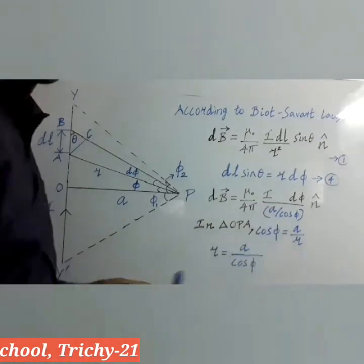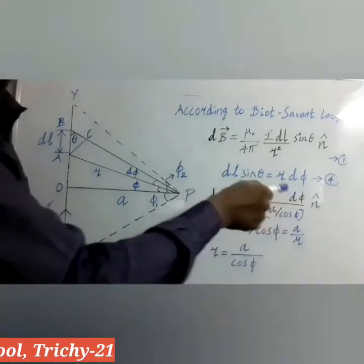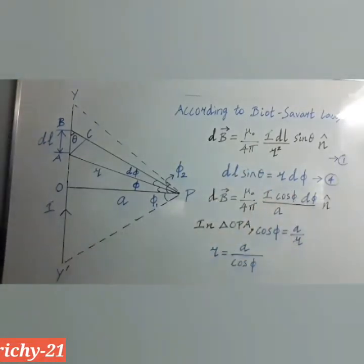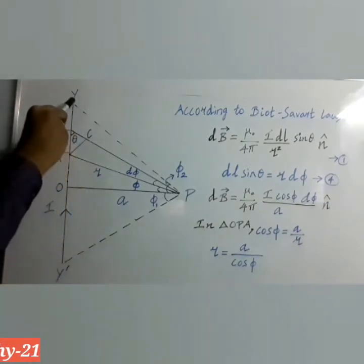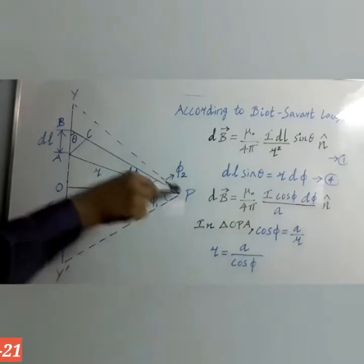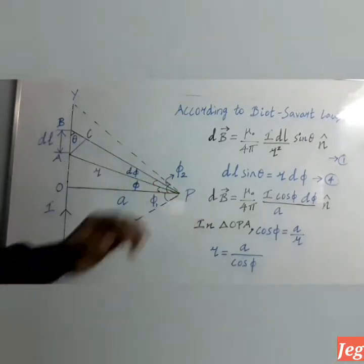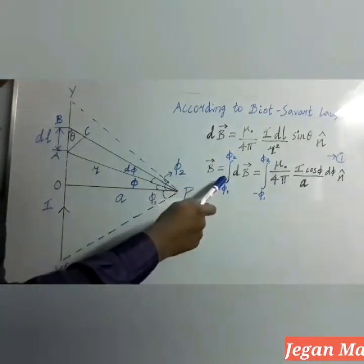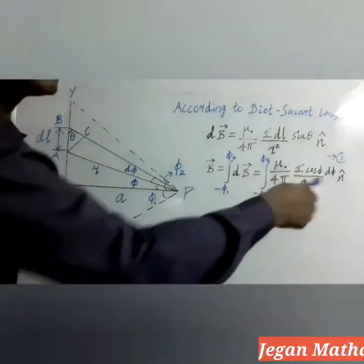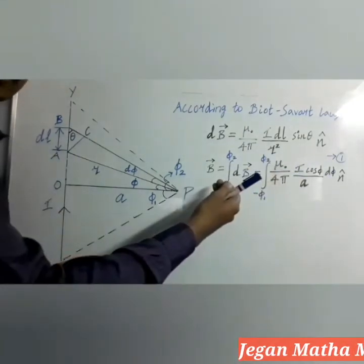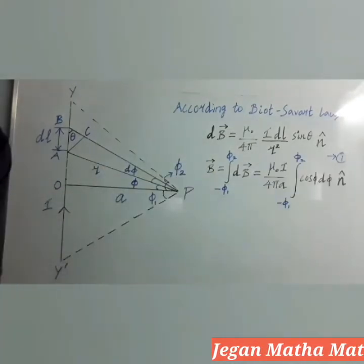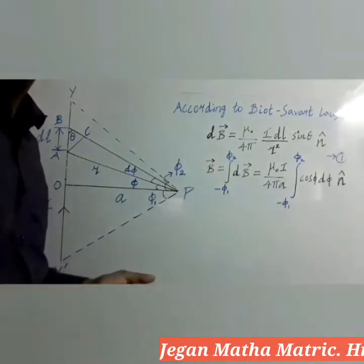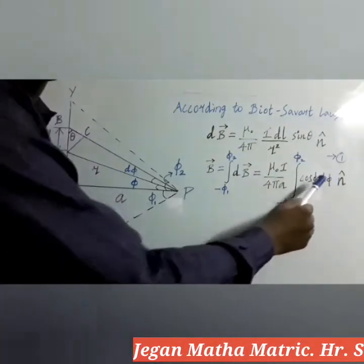This is the expression for the magnetic field due to the current element. To find the magnetic field due to the long wire at point P, we have to integrate the given expression with upper and lower limits applied. The constant values μ₀I by 4πA can be taken outside the integration, leaving cosΦ·dΦ to be integrated.